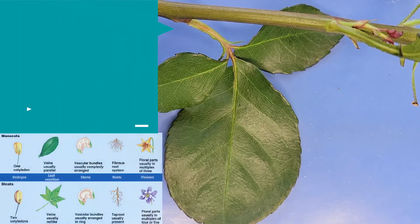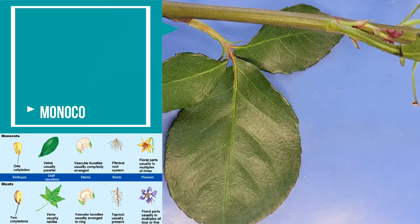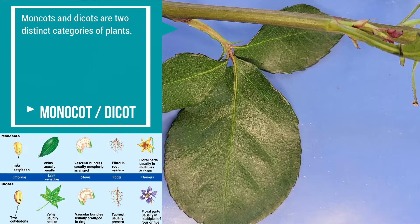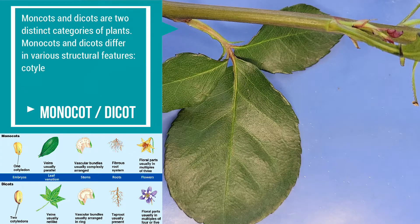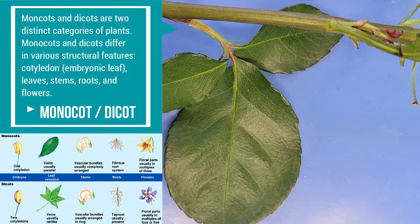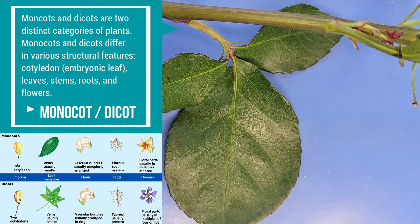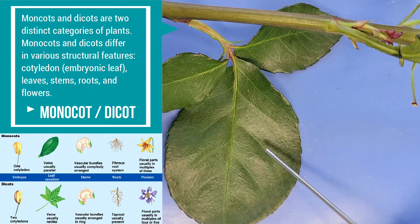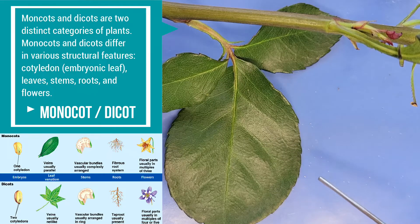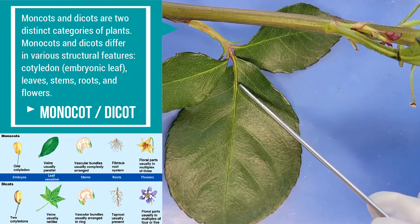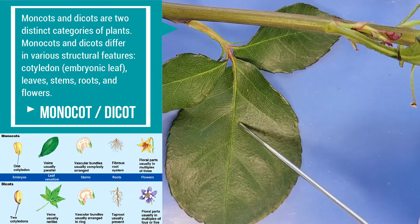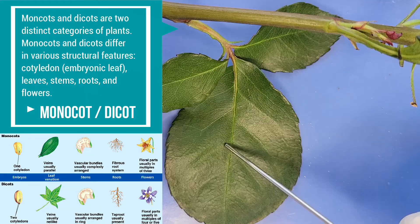You can also tell if a rose is a monocot or dicot by looking at its leaves. Monocots are one group of flowering plants that have leaves with parallel veins — think of grass. In contrast, dicots, the other group, have branching or netted veins in their leaves. As you can see, rose leaves have branching veins, so we can tell that roses are dicots.